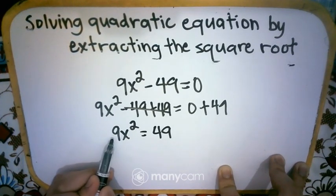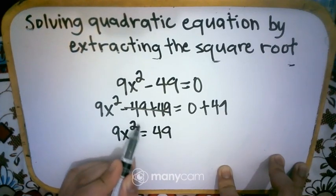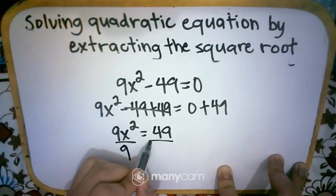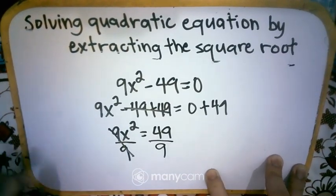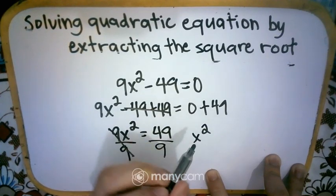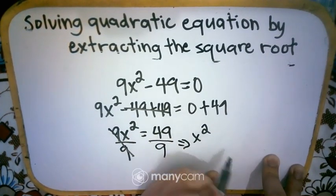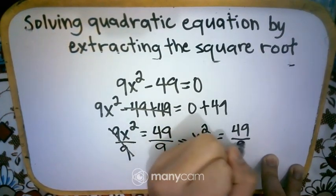So next, divide by 9 first. The last part is removing the exponent. So divide by 9. Divide by 9. So cancel 9. So we have x squared.